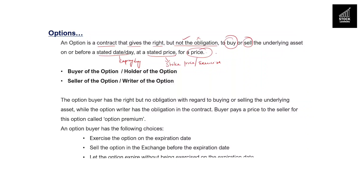Look at the terminologies we use for the price — this is going to be the premium. This is how you read the definition for an option contract. The option contract gives the right to the buyer, but not the obligation to buy — this type of option is called a call option — and not the obligation to sell — which is called a put option.